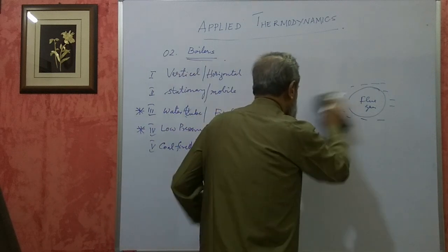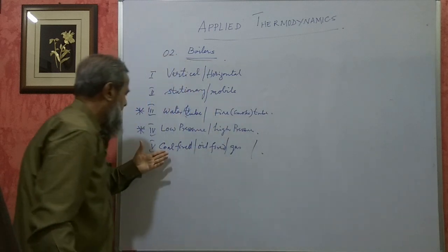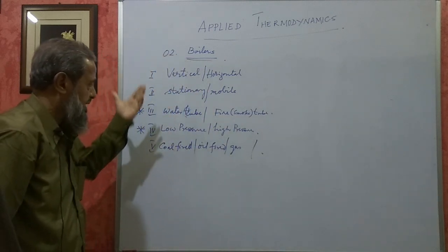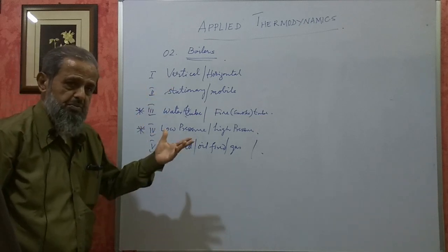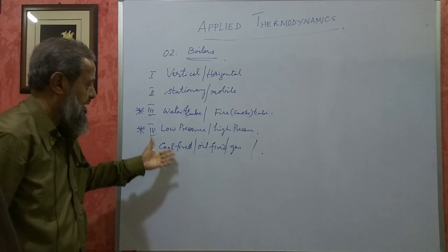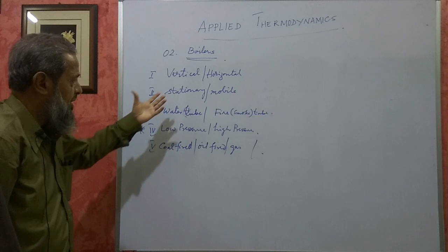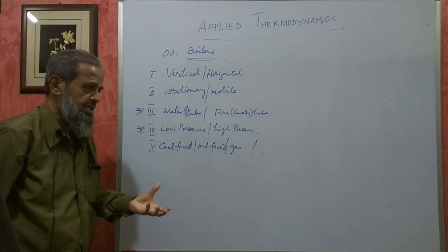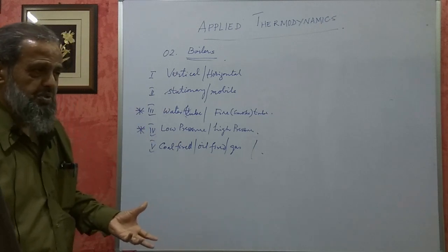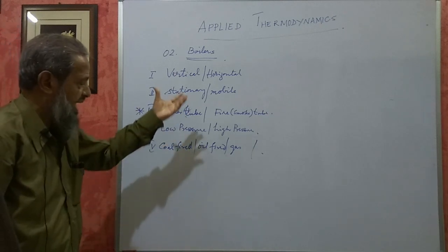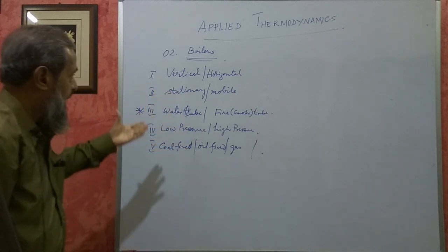There are different factors which influence the selection of a boiler. For example, we cannot have a coal-fired boiler in a hospital because it would spoil the environment of the hospital. So, for what purpose we are using the steam, what should be its pressure, and what is the quantity of steam to be generated — these factors will determine which type of boiler to use.